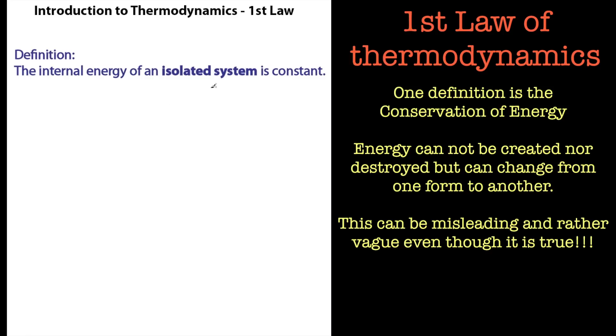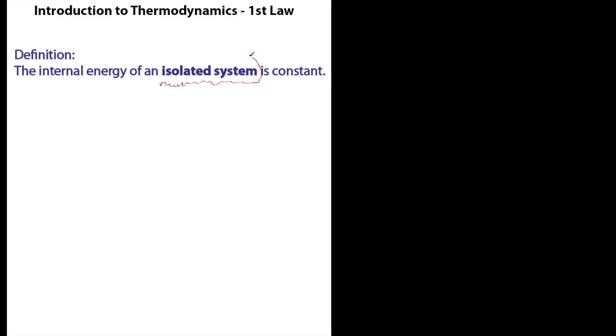The internal energy of an isolated system is constant. For most of us that comes across as gobbledygook, but let's have a look at this in a bit more detail. We have this term here isolated system, very very important when we're describing this first law of thermodynamics. Also it's constant and also we've got internal energy. So let's have a look first at what isolated systems mean.